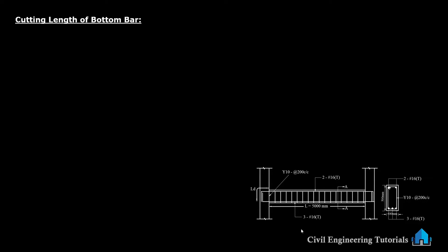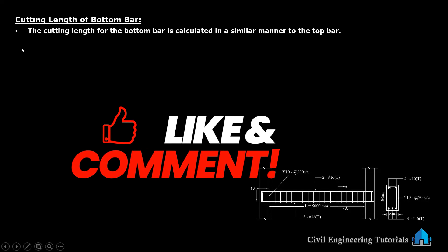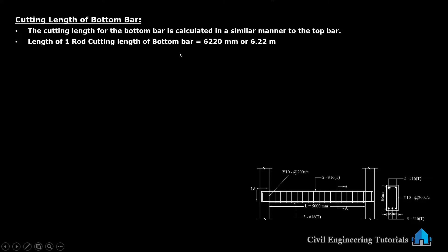Next, we have to calculate cutting length of bottom bar. Cutting length for the bottom bar is calculated in a similar manner to the top bar. Cutting length of bottom bar is also 6.22 meter, because the diameter of bars are the same — both are 16 mm diameter.